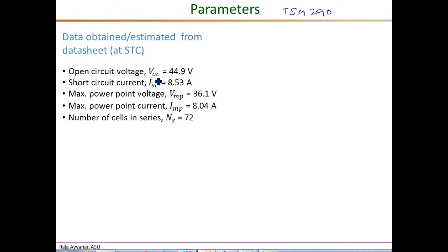So we obtained the open circuit voltage VOC, short circuit current ISC, the voltage and the current at the maximum power point, namely the VMP and the IMP. And we also got the number of cells in series, which was 72 cells. So these five values are given directly in the datasheet in some tables.